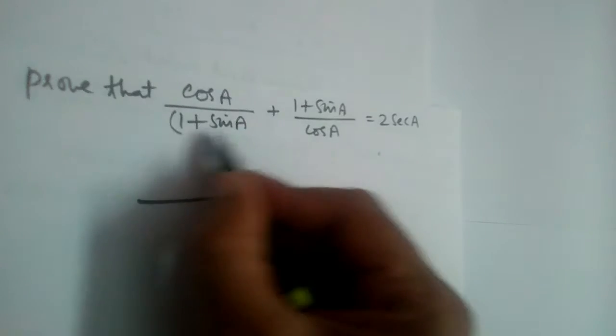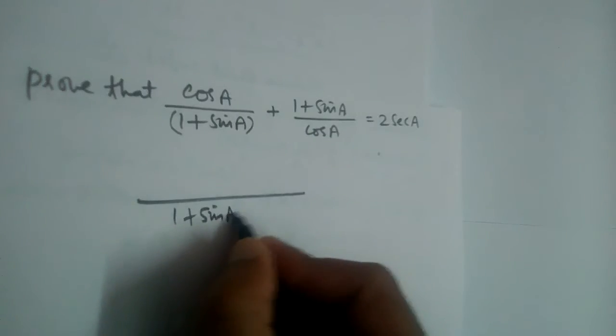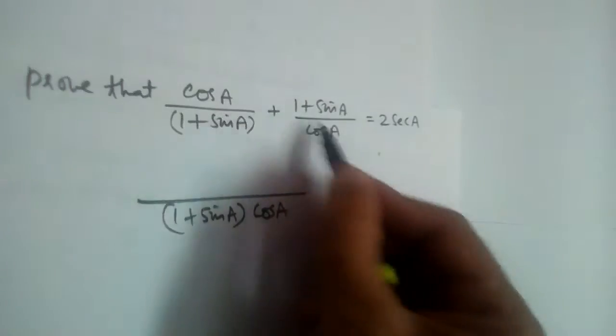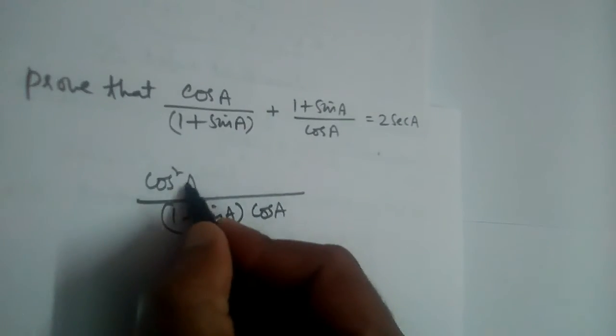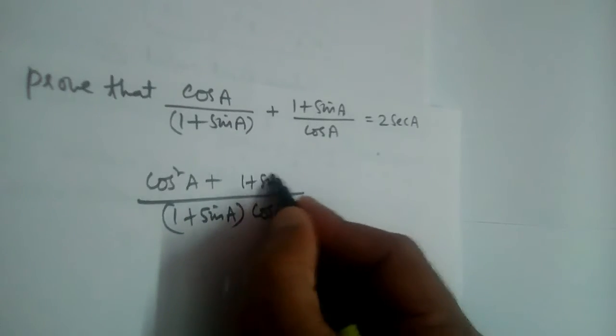So we should multiply the denominators. 1 plus sine A multiplied by cos A. So 1 plus sine A multiplied by cos A. And now cos into cos is cos square A, plus 1 plus sine A into 1 plus sine A is 1 plus sine A whole square.